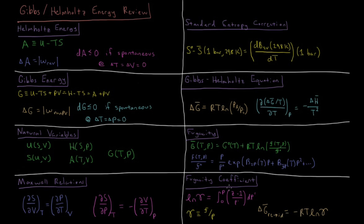We define the fugacity coefficient φ, which relates the fugacity to the pressure. For an ideal gas the fugacity and pressure are the same, so the fugacity coefficient for an ideal gas is one. Any deviation of the fugacity coefficient from one indicates non-ideal behavior.